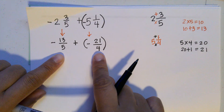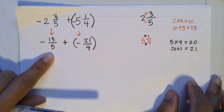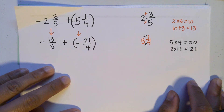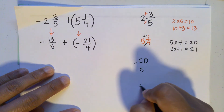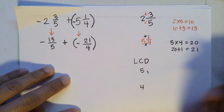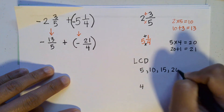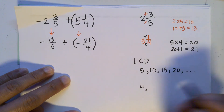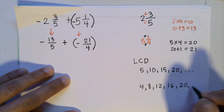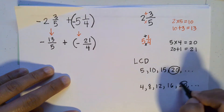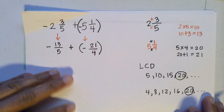Now we look at the denominators. Since five and four are different, we find the LCD, which is the least common multiple. Listing multiples of five: five, ten, fifteen, twenty. Multiples of four: four, eight, twelve, sixteen, twenty. Twenty is the least common multiple, so we change the denominator to twenty.